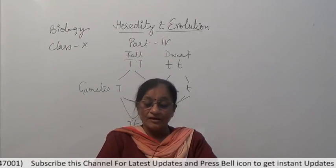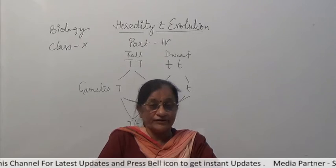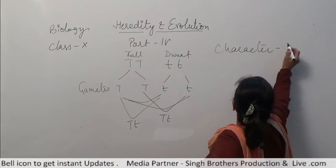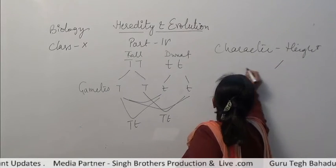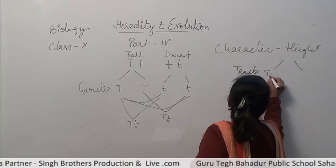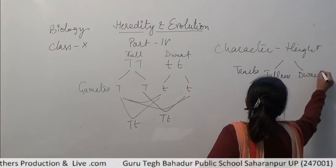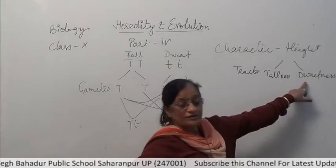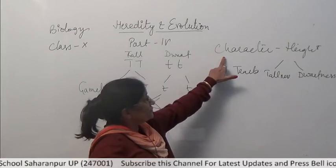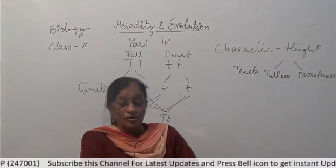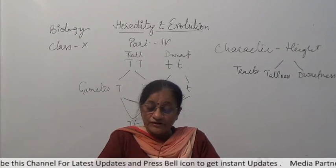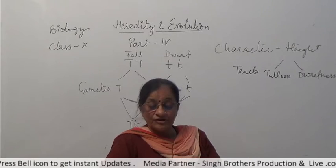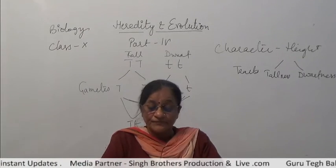The second rule, proved by monohybrid and dihybrid cross, is the rule of dominance. When two dissimilar factors of a character are present in an organism — for example, the character height has two dissimilar traits, tallness and dwarfness — one trait or factor expresses itself. The factor that expresses itself is called the dominant factor.